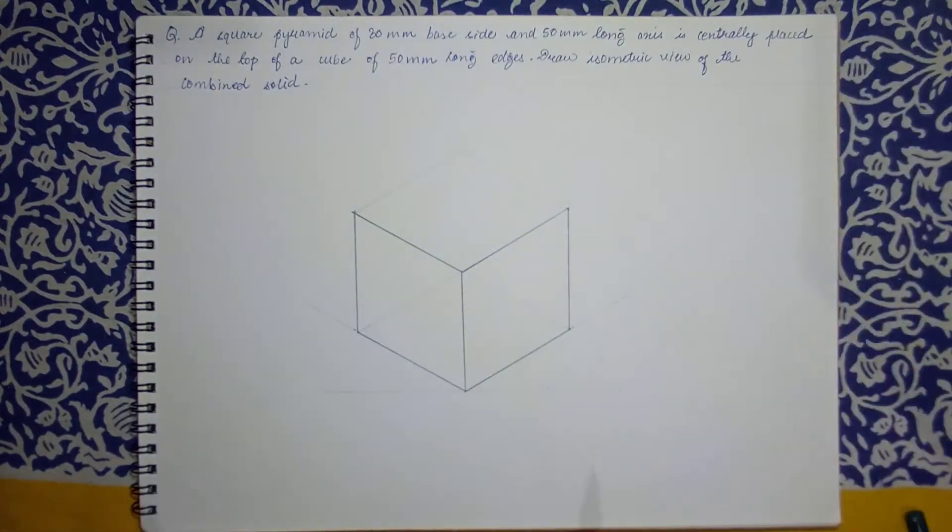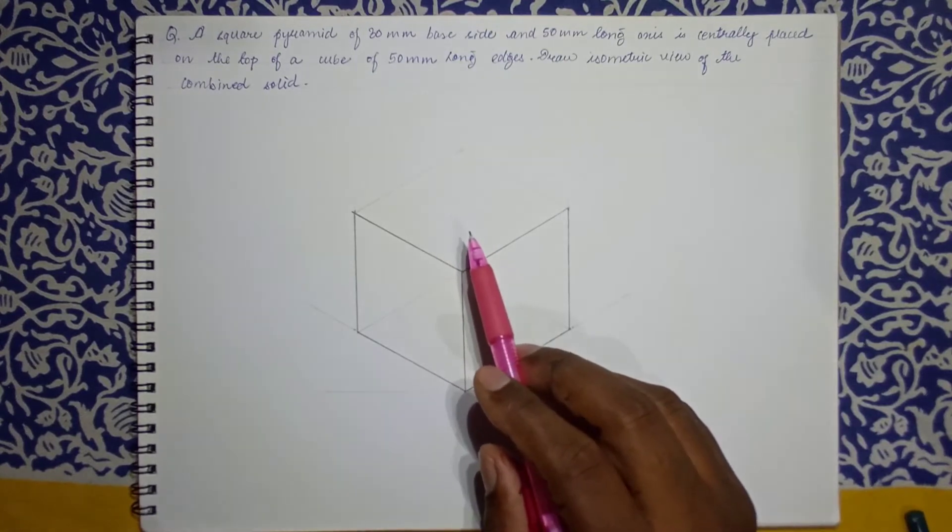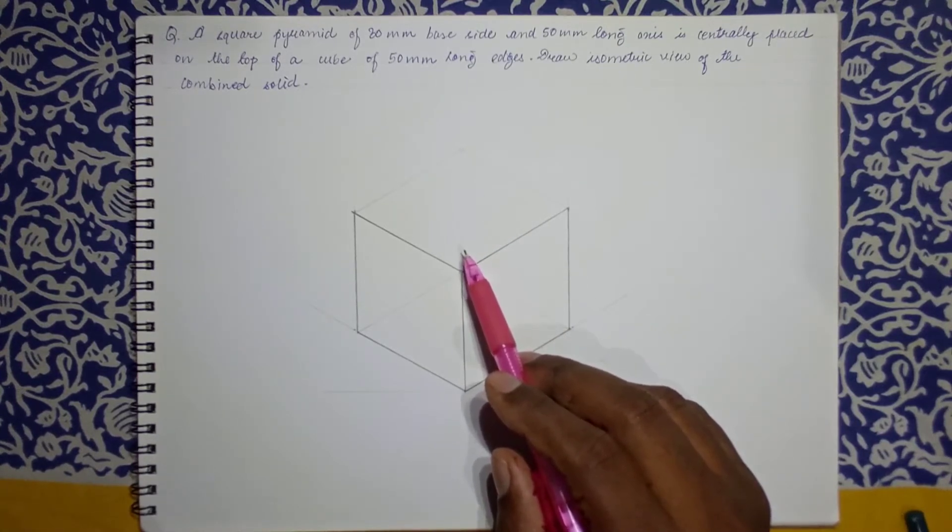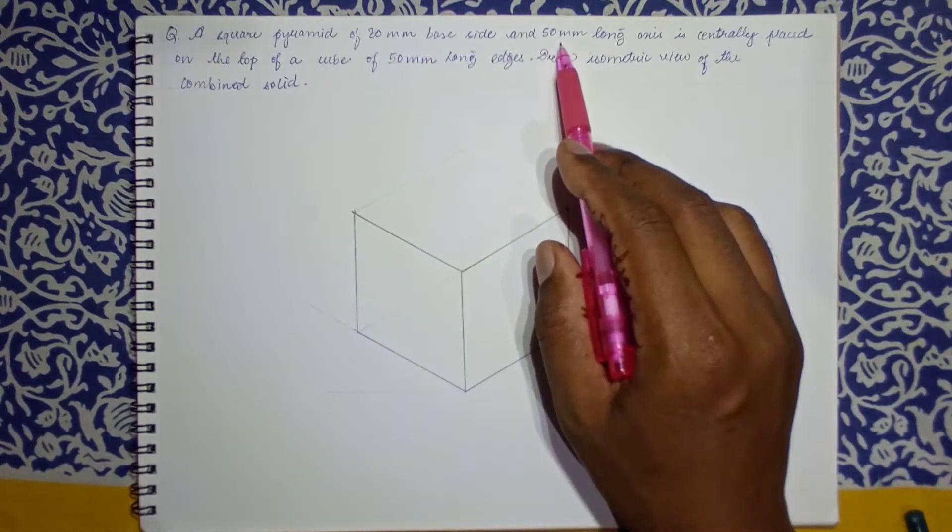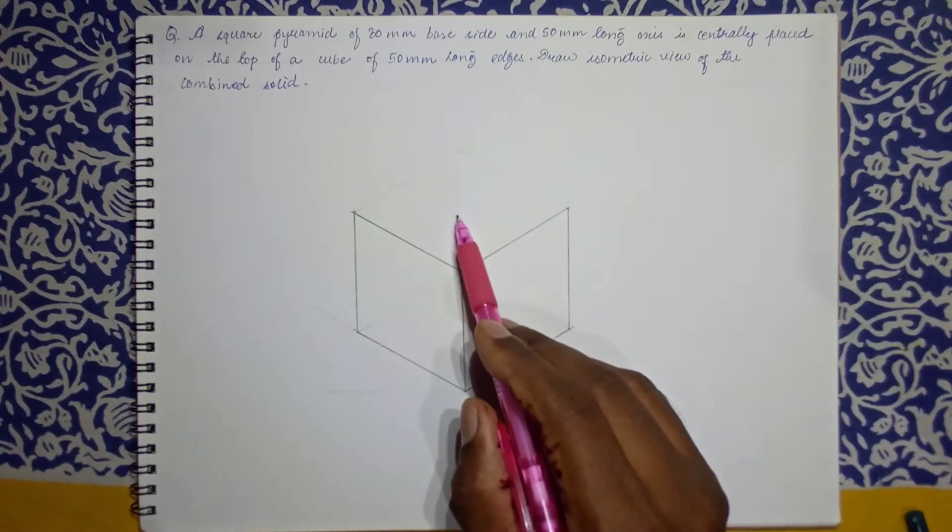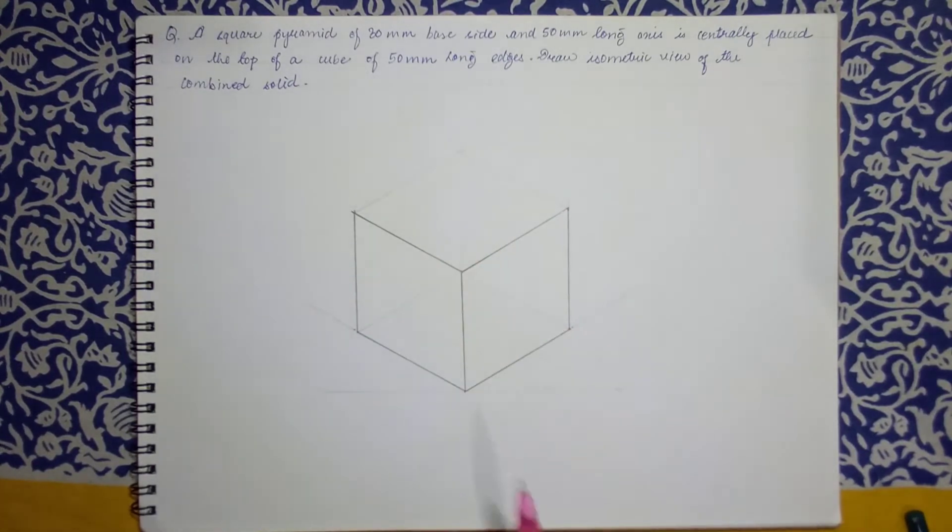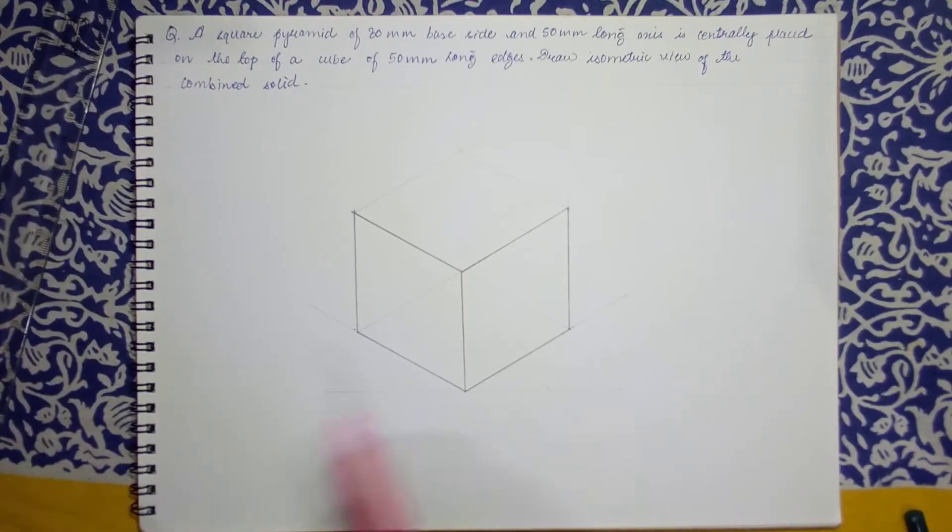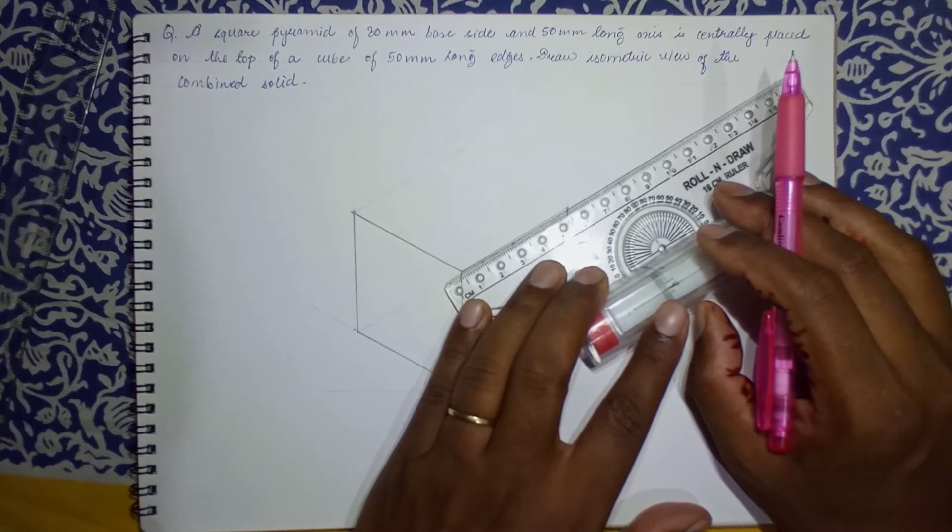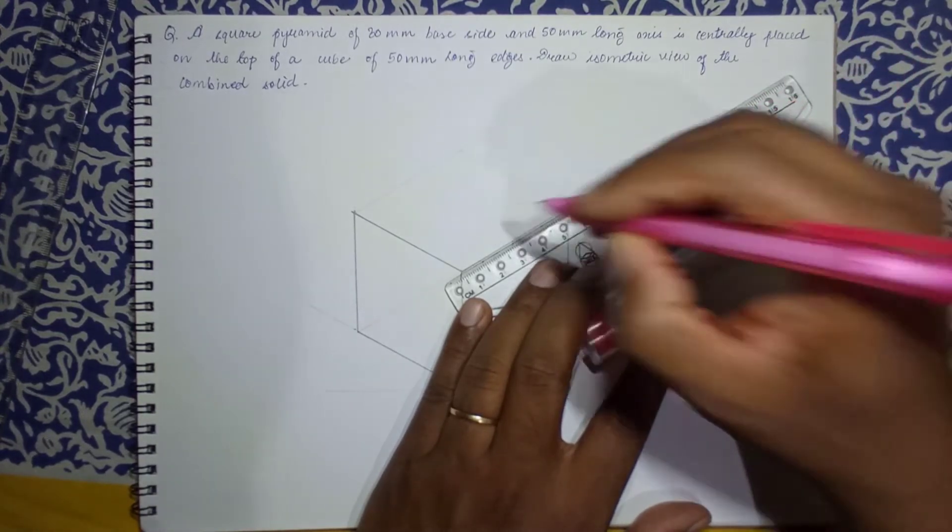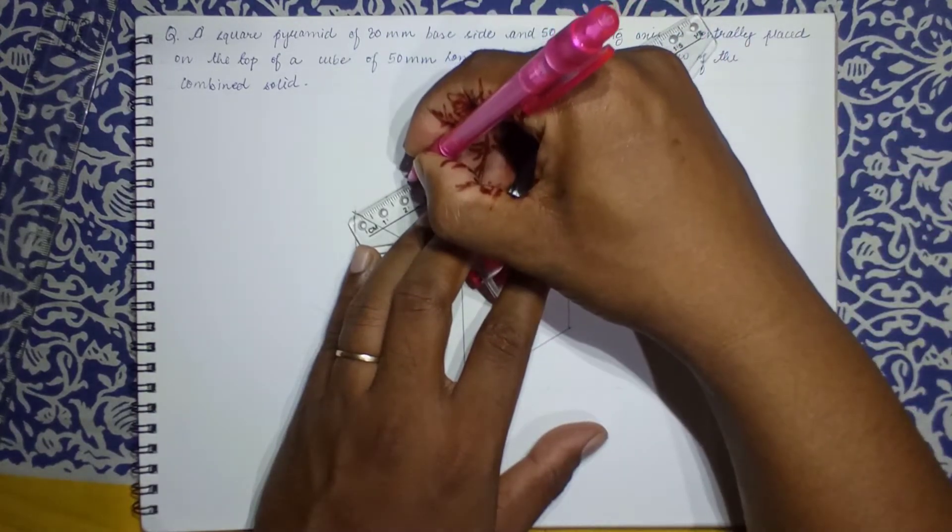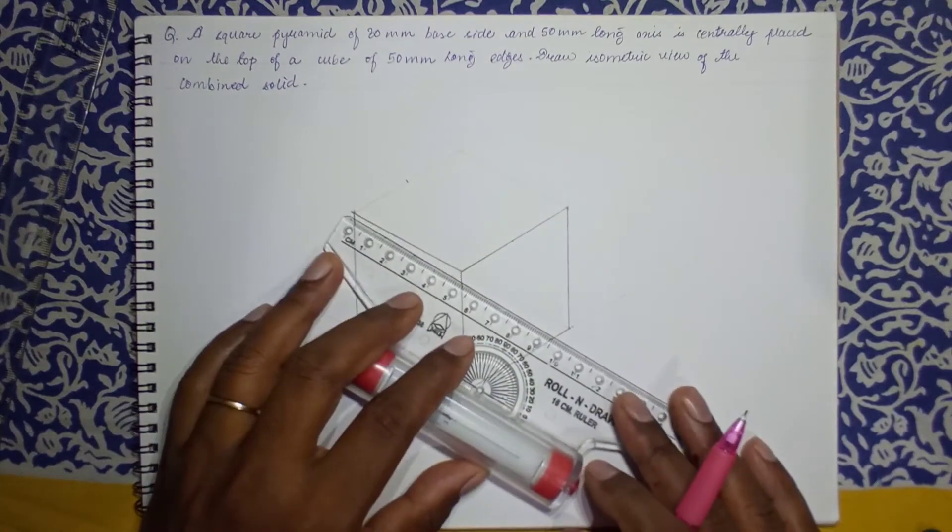Now this is the given data in the question. We have drawn it, so this is right now drawn, and on this upper face you have a pyramid. It's a square pyramid having 30mm base and the axis is 50mm long. We need to find the center as it is mentioned that it is centrally placed. To get the center of this, we can plot the midpoint. We can have a midpoint of this, somewhere over here. 50 hai toh 25 pe humare midpoint hoga. This side ka bhi midpoint lete hai.